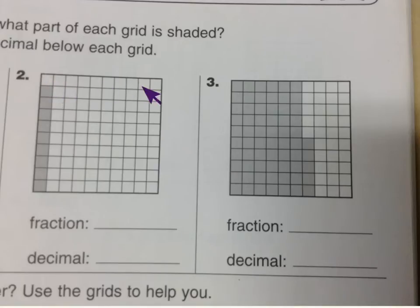And there are 100 boxes in this square. So the bottom number of our fraction is going to be 100. And I'm going to let you count the number that you think goes on top of that. But you should be able to figure that out pretty easily.